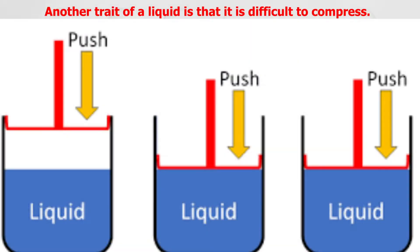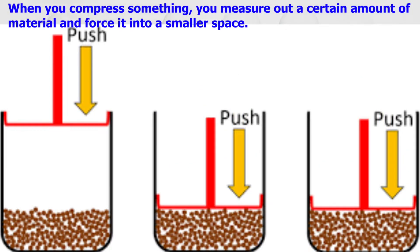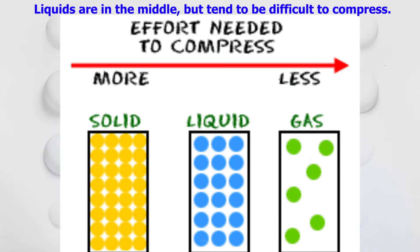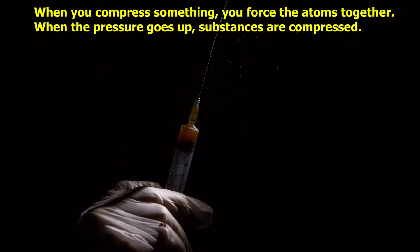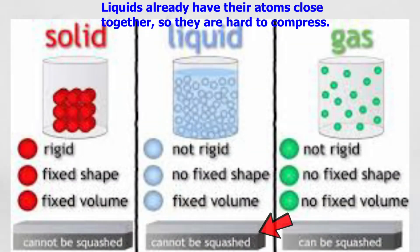Another trait of a liquid is that it is difficult to compress. When you compress something, you measure out a certain amount of material and force it into a smaller space. Solids are very difficult to compress and gases are very easy. Liquids tend to be difficult to compress as well. When you compress something, you force the atoms closer together. When the pressure goes up, substances are compressed. Liquids already have their atoms close together, so they are hard to compress.